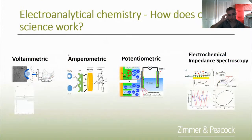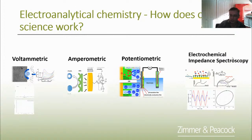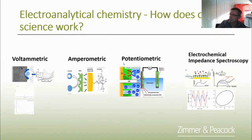In electrochemistry, we have voltammetry, amperometry, potentiometry, and electrochemical impedance spectroscopy. Today we're going to focus just on electrochemical impedance spectroscopy. Voltammetry, amperometry, and potentiometry are also very useful, but today's talk covers one of the not-well-understood topics — impedance spectroscopy. If you look back through some of our webinars, you'll see we've covered voltammetry, amperometry, and potentiometry, and we even did some live demos.